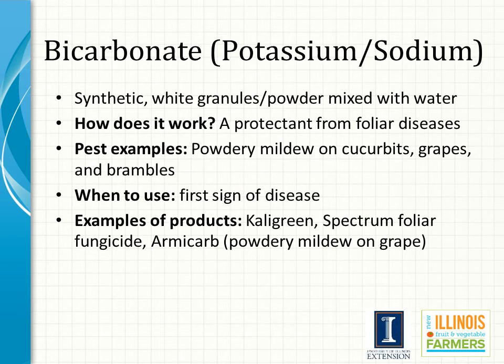Bicarbonate is a synthetic white granular powder that is mixed with water and then applied on the foliage, where it acts as a protectant for certain foliar diseases. Some diseases that can potentially be controlled are powdery mildew on grapes, cucurbits, and brambles. This pesticide will need to be applied at first sign of disease. Examples of products available include Kaligreen, Spectum, and Armicarb — Armicarb especially for powdery mildew on grapes.